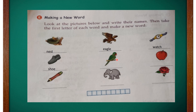The next picture is a shoe — S-H-O-E, shoe. Moving on, the next picture is a parrot — P-A-R-R-O-T, parrot. And the next one is an apple — the spelling of apple is A-P-P-L-E.